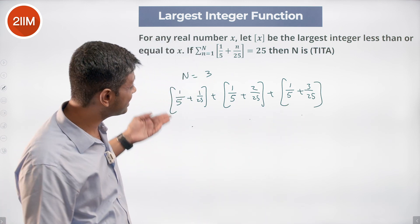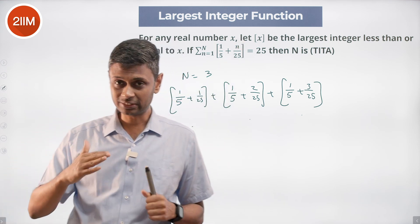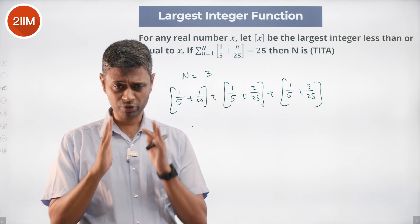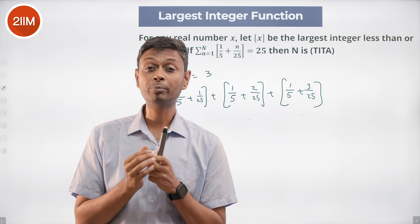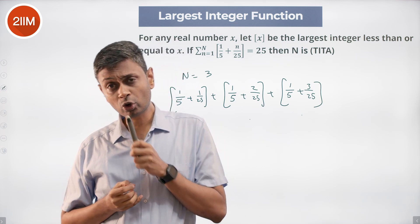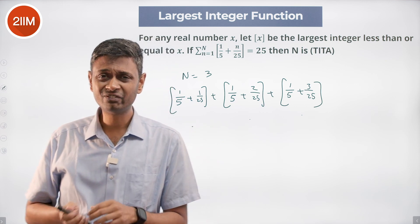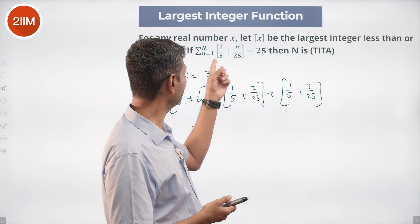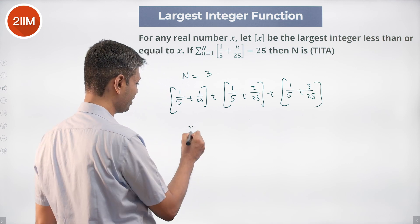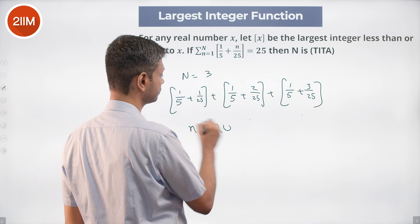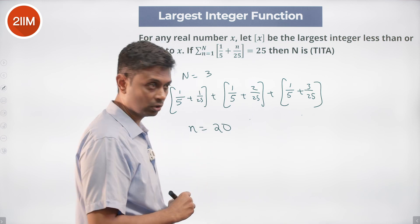When will this become 1? The greatest integer of 0.9999 is 0, of 1.00001 is 1, greatest integer of 1 is 1. When does it become 1? Here it should be 4/5 — if n were 20, that's when it will go to 1.